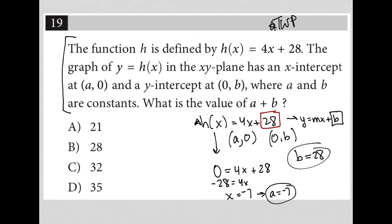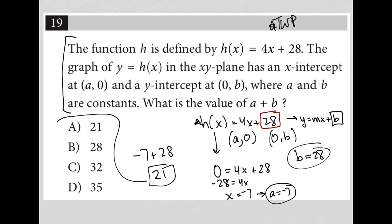Therefore, a is negative 7. Those are my two values. The question wants a plus b, so that would be negative 7 plus 28, which is positive 21. Therefore, my answer is choice A.